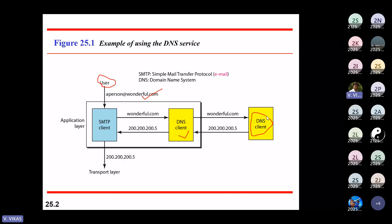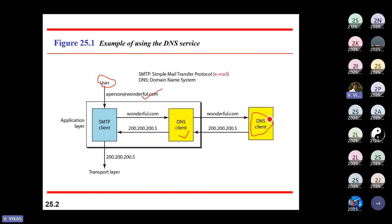DNS maps names with IP addresses. If you have a name, it maps to an IP; if you have an IP, it maps to a name. That point should be clear for everyone.